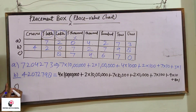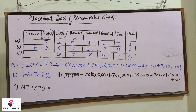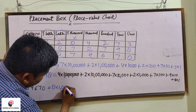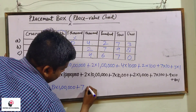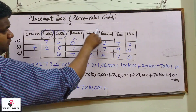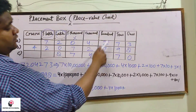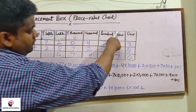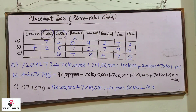Now let us take the last number — not the least. The number is 8,74,670. Eight into one lakh, plus seven into ten thousand, plus four into one thousand, plus six into one hundred, plus seven into ten, plus zero — we shall not consider. So this is it about the placement box or the place value chart.